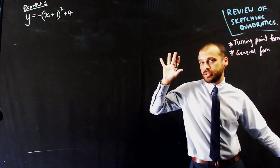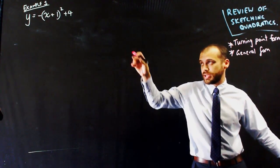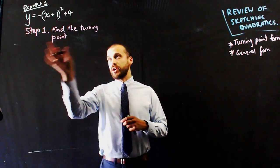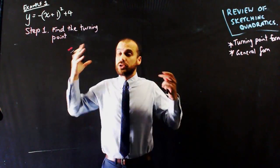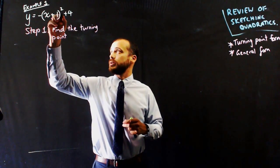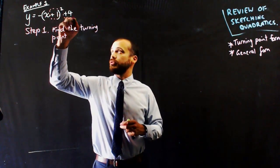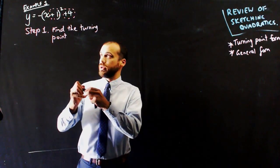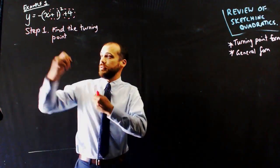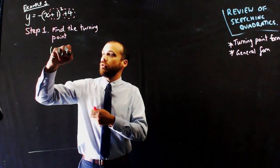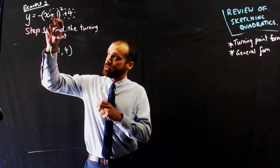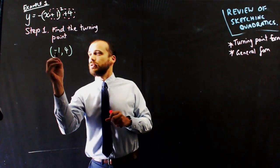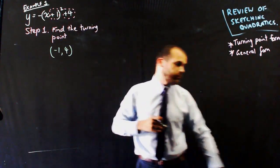Here's the first example, in turning point form: y equals negative x plus 1 squared plus 4. Step 1 is to find the turning point. It's in turning point form, so the turning point comes from those values. Remember, the turning point is negative 1, 4 — because that positive 1 flips sign to become negative 1.